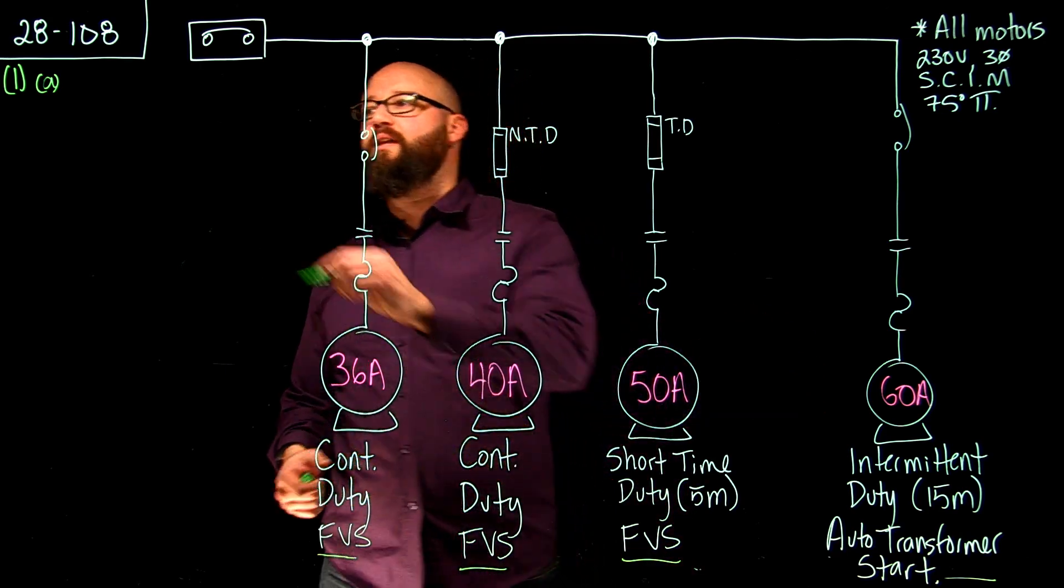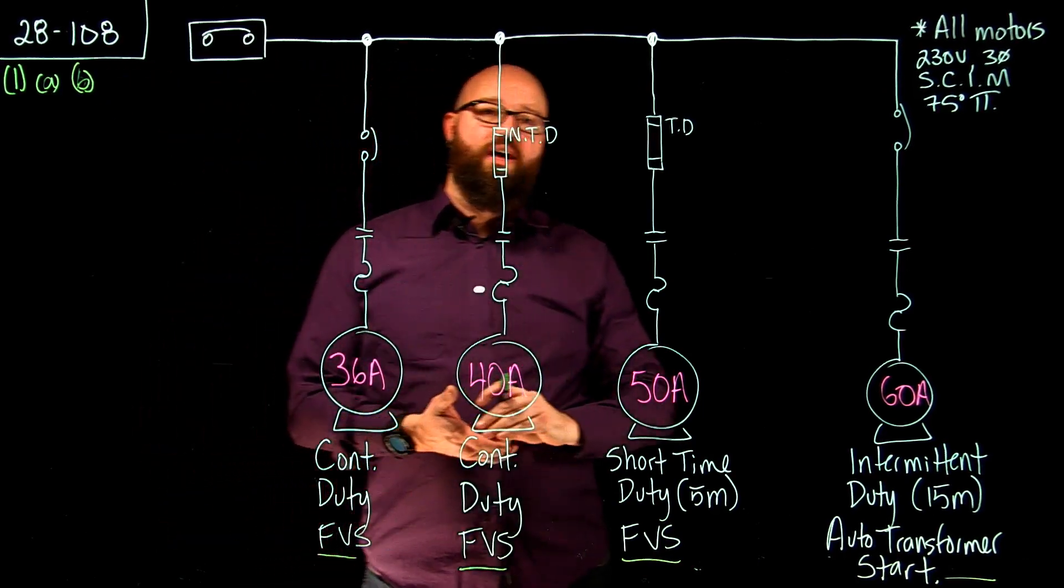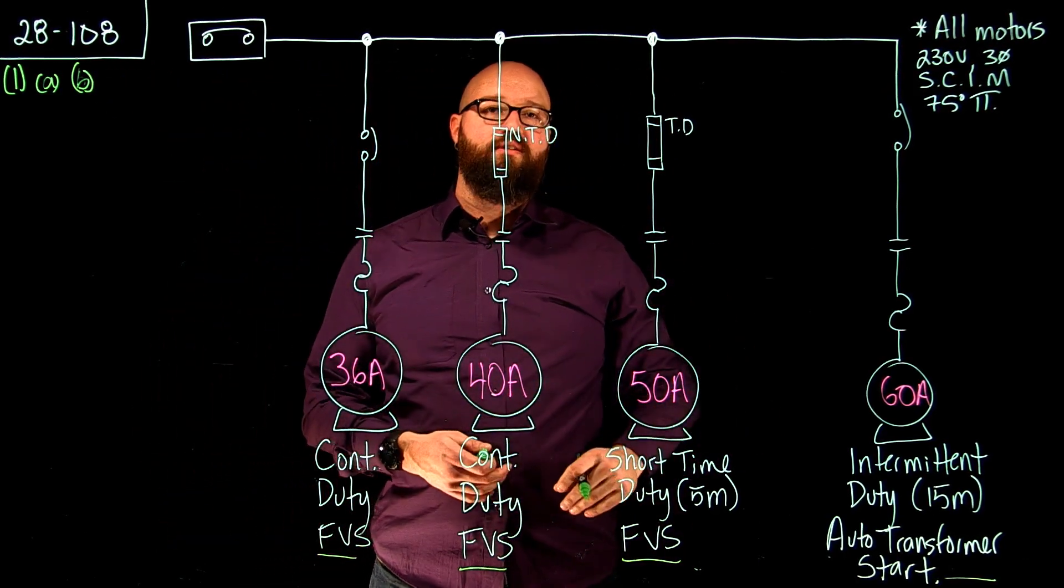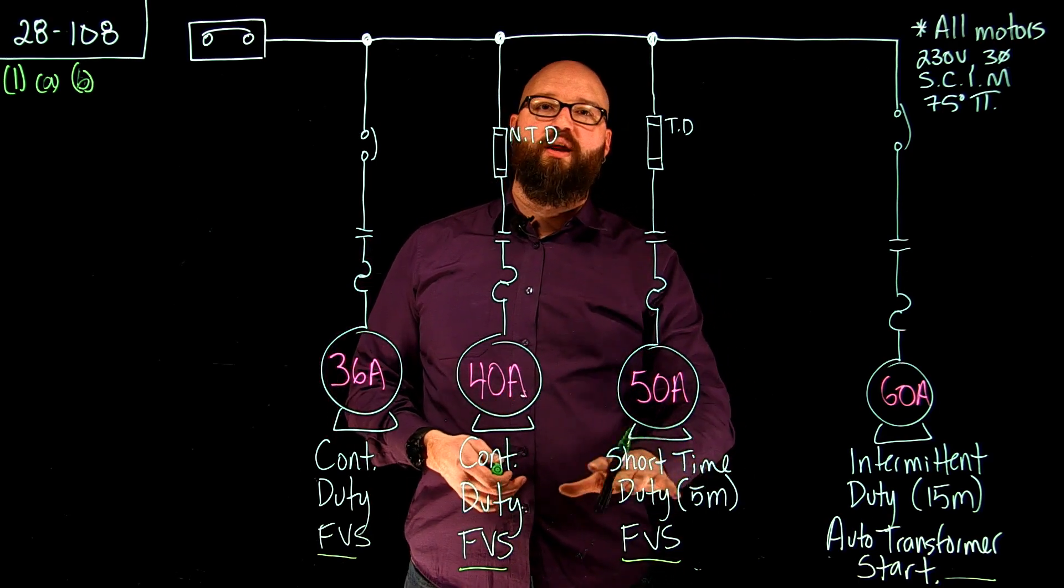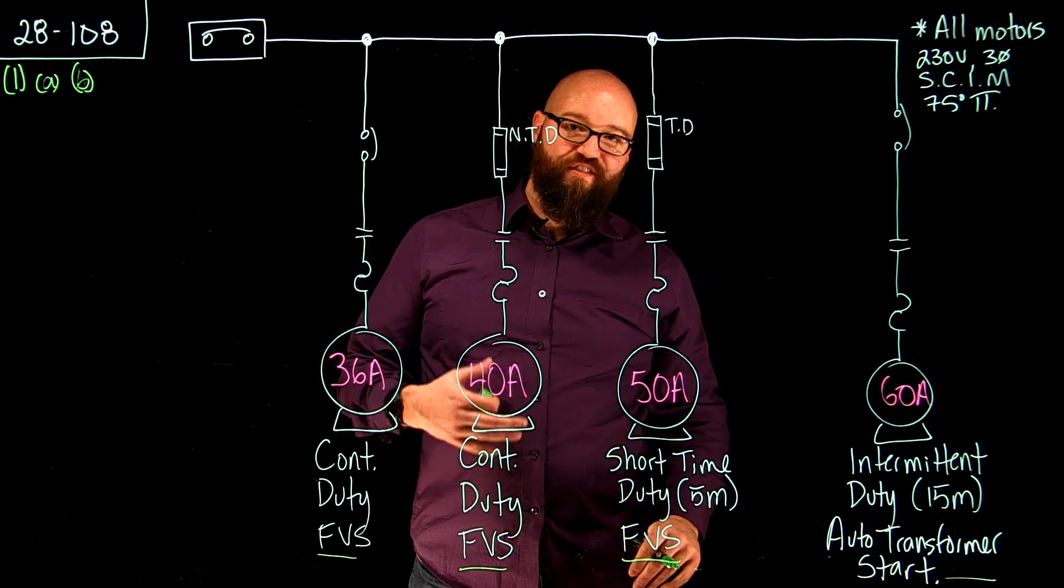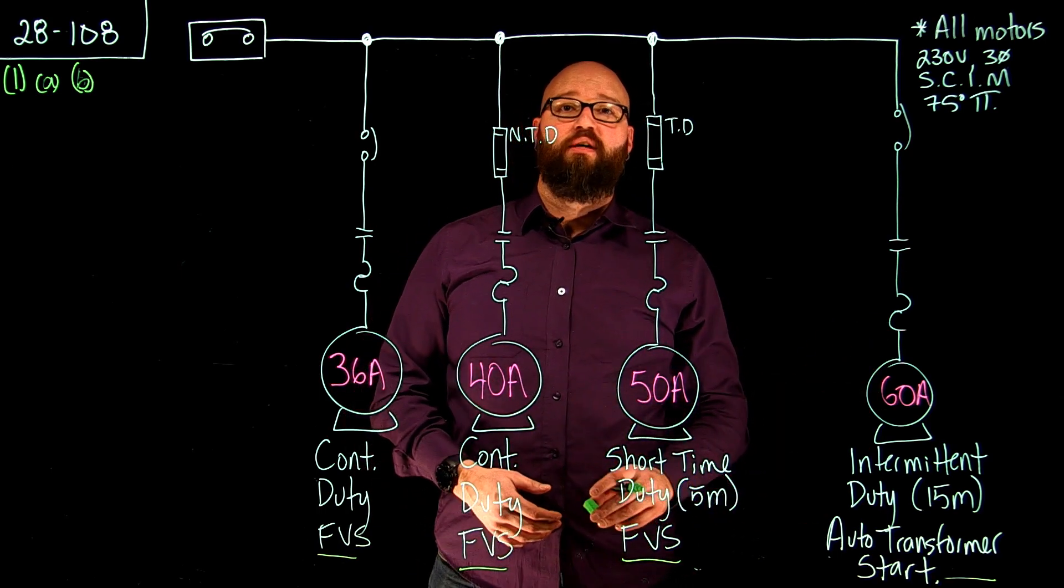For our non-continuous Item B, it tells us that we're going to go to Table 27 and we're going to find that multiplying factor for what our duty rating of our motor is. We're going to find that calculated value and then we're going to add all those calculated values together.